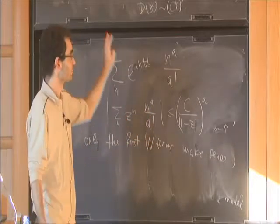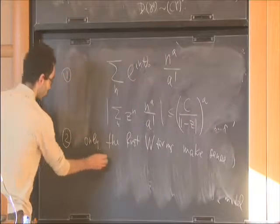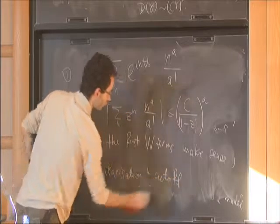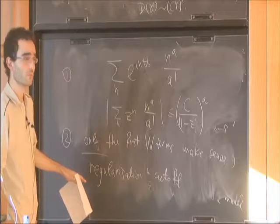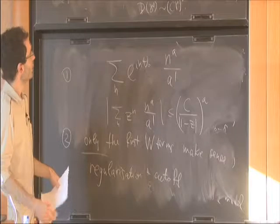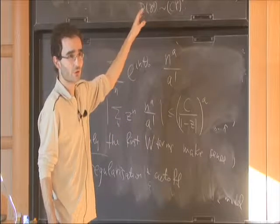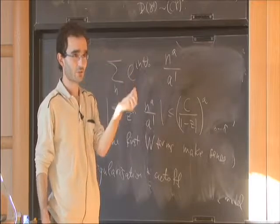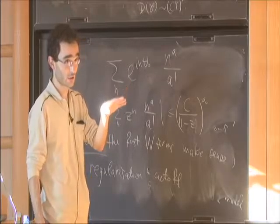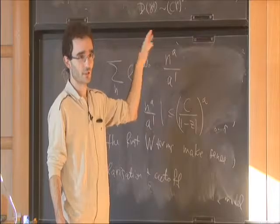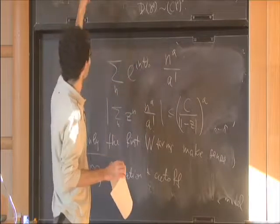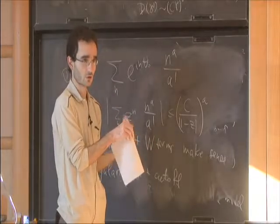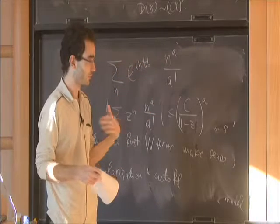So these are the two issues. What I will explain now is a regularization procedure to make rigorous sense out of this. We do two things: regularization and cutoff. Epsilon and the number of terms taken are tied together — if you want smaller epsilon you need to take more terms. If I want to take epsilon as small as 1 over W squared, I wouldn't object to making only the first five terms rigorous, or even just the first term.